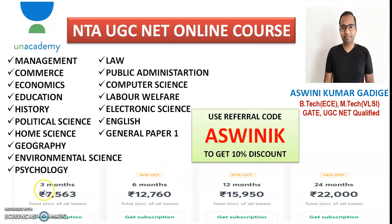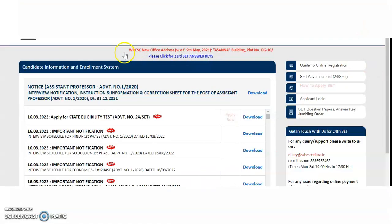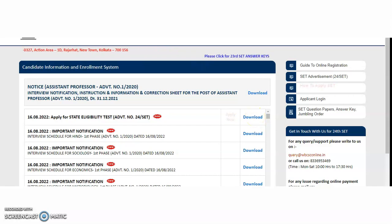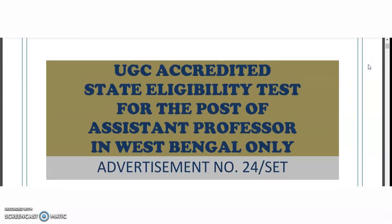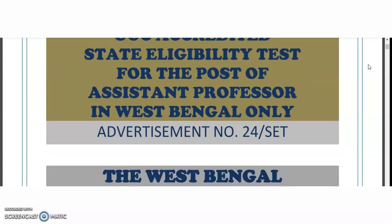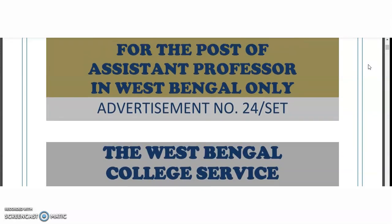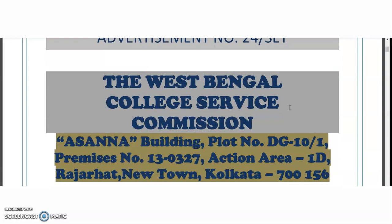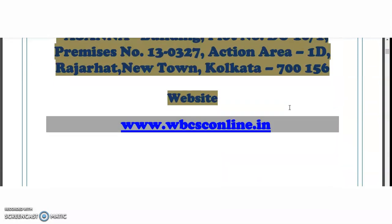Now coming to the present content of the video: it is the West Bengal College Services Commission, and from this we got the state eligibility test notification. If you want to apply, just click on this and it will be directed to the online application. If you want to see the brochure, click on download and the detailed brochure will be downloaded. This is the UGC-aggregated state eligibility test for the post of assistant professor in West Bengal only. It doesn't mean that other state candidates cannot apply — it means that once you qualify, you are eligible for assistant professor notifications in West Bengal only, not in other states. That's why other state candidates can also apply for this position.